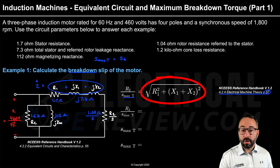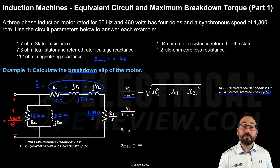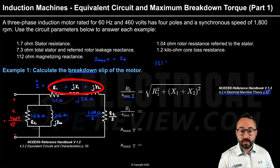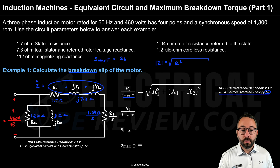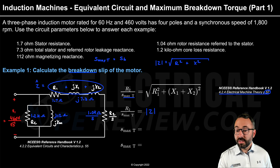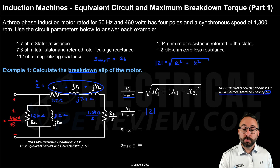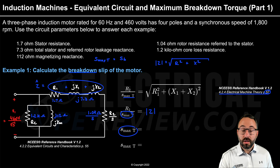The square root in the formula comes from the Pythagorean theorem — converting a complex number from rectangular to polar form to get its magnitude. The magnitude of the total series complex impedance equals the square root of the total real component squared plus the total imaginary component squared. This is the magnitude of the series impedance leading up to the rotor slip resistance. Since we're solving for breakdown slip, we rearrange the equation to solve for S_maxT: S_maxT = R2 / |Z|.